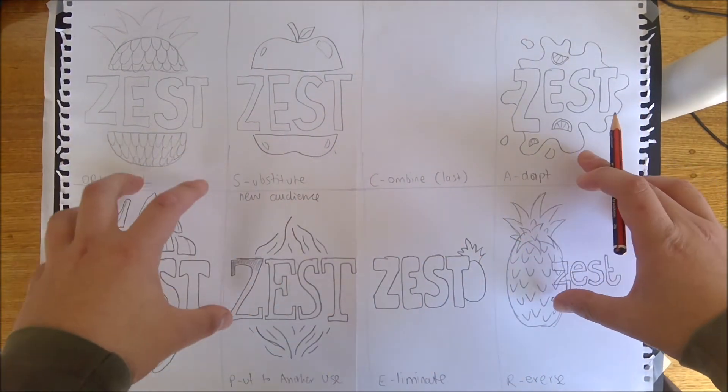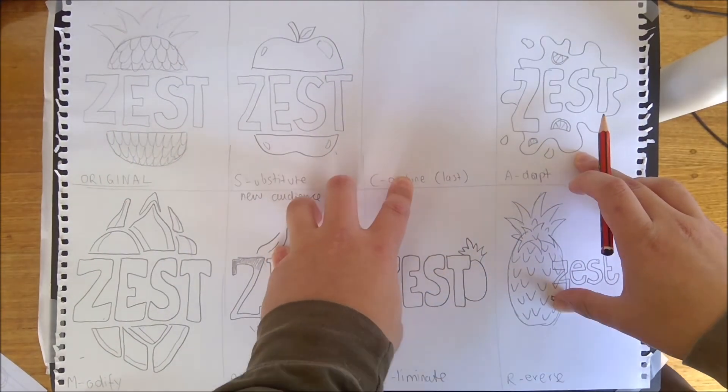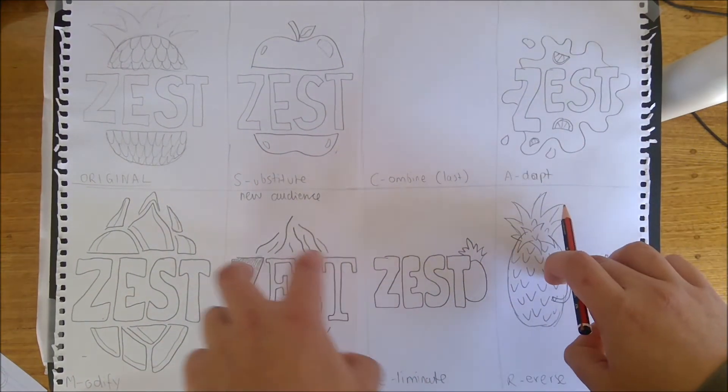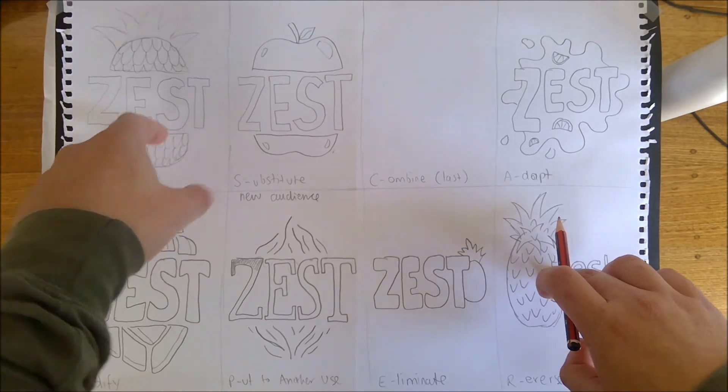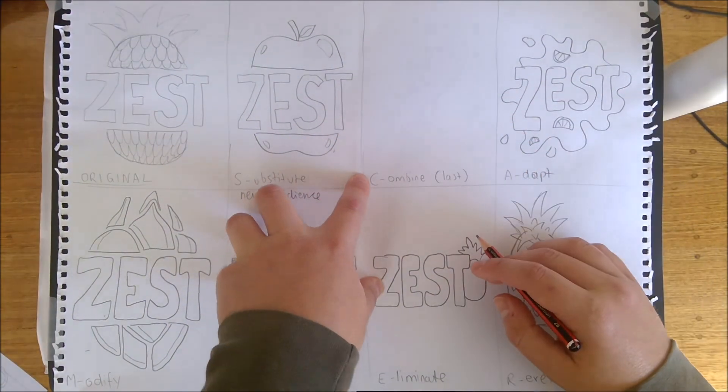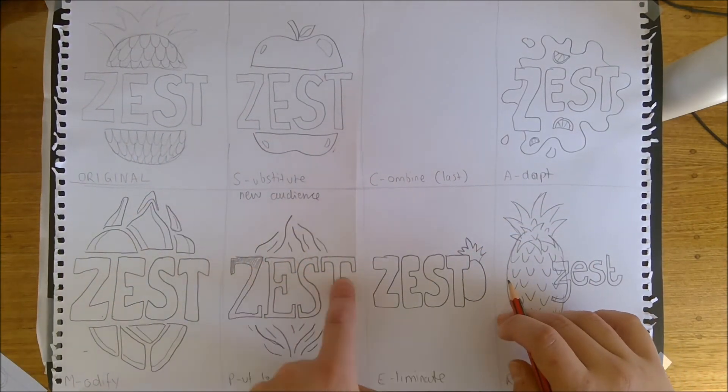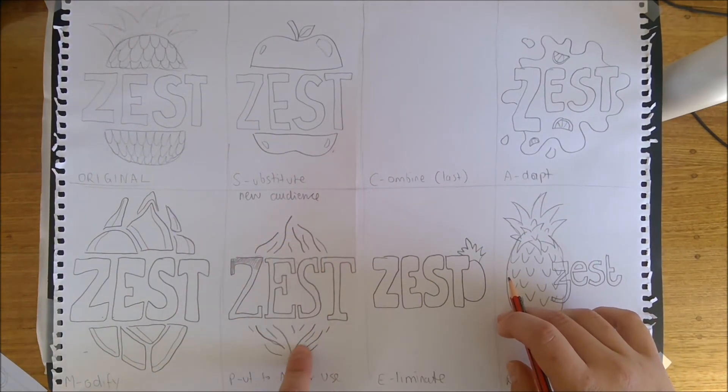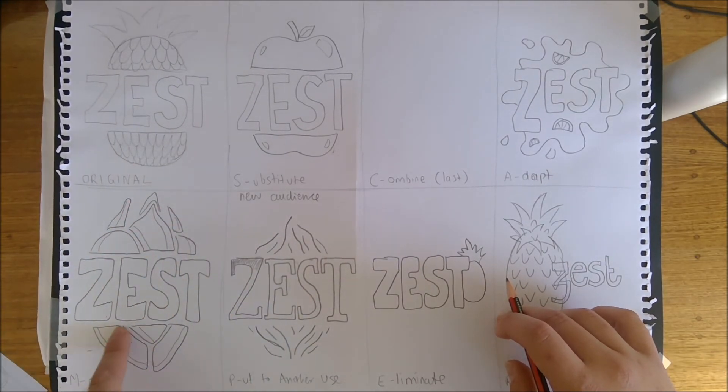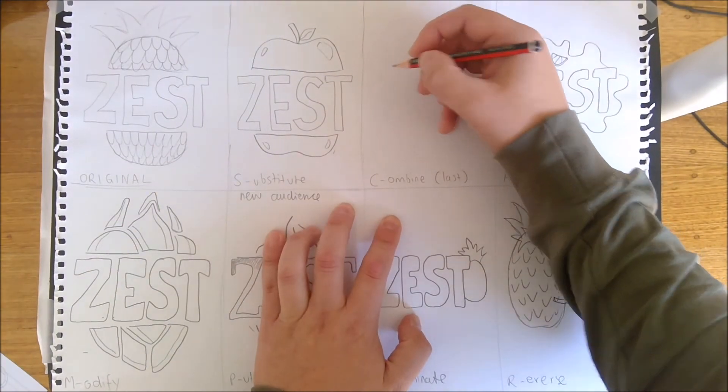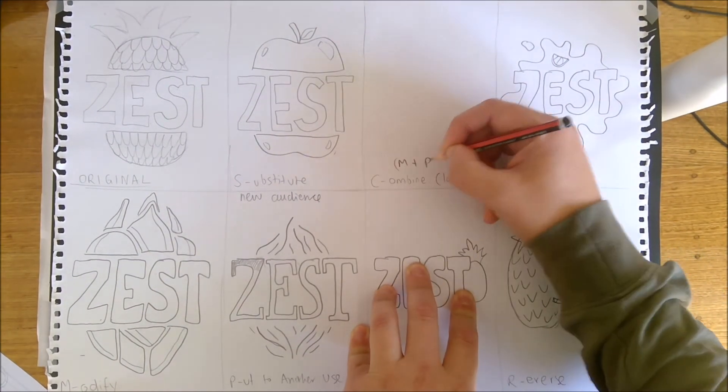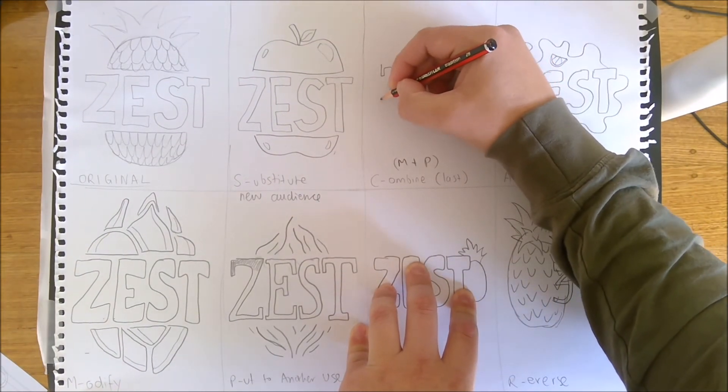Now that I've got seven interesting designs to choose from, I can do my combine. So what you have to do for your combine is you need to choose two or more designs out of the seven that you've already done and create a brand new eighth one. So for combine, what I'm going to do is I actually quite like the font in here but I don't particularly like the visuals. What I might do is I might use that font and combine it with this feature here from the modify. So I'm going to combine M and P and I'm going to redraw my font.